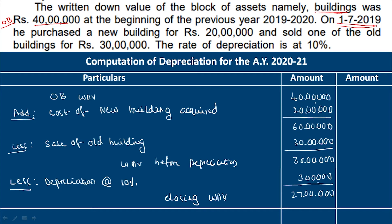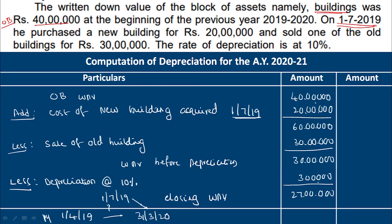Here, cost of the new building purchased on 1-7-2019 — so it is more than 180 days. I will check the previous year. The previous year is 1 April 2019 to 31st March 2020. So purchase was made at the start of the previous year. So it comes to more than 180 days, so they will charge full depreciation.